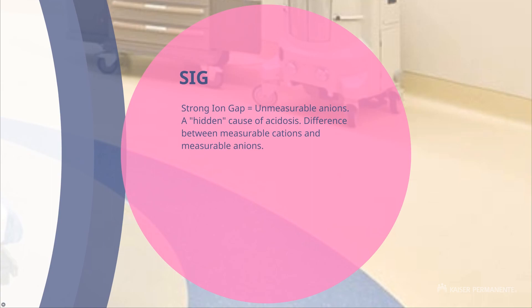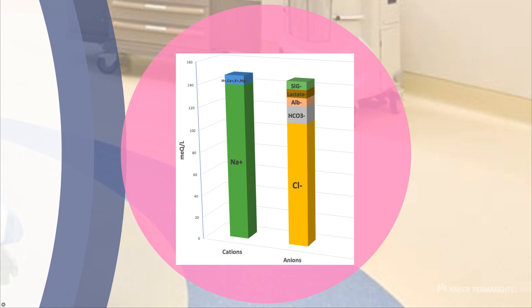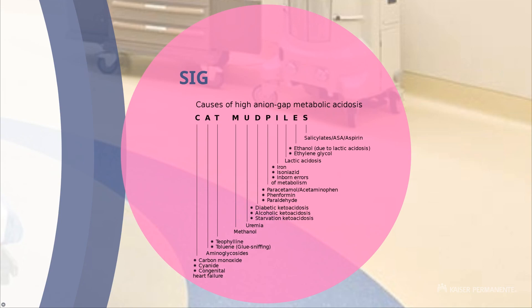The strong ion gap is the top right section of the Gamblegram. When you hear 'gap,' think a gap in your knowledge — you don't know what's in the strong ion gap because we don't have laboratory technology to measure these things directly. There are hidden anions that can accumulate and cause bicarb to go low and cause acidosis without being directly measurable. Just like other negatively charged items, if a strong ion gap component increases in quantity, bicarb decreases and you get acidosis. Examples include aspirin toxicity, ketones in diabetic ketoacidosis, and carbon monoxide. Lactate used to be part of the gap but can now be measured directly, so it's no longer included.